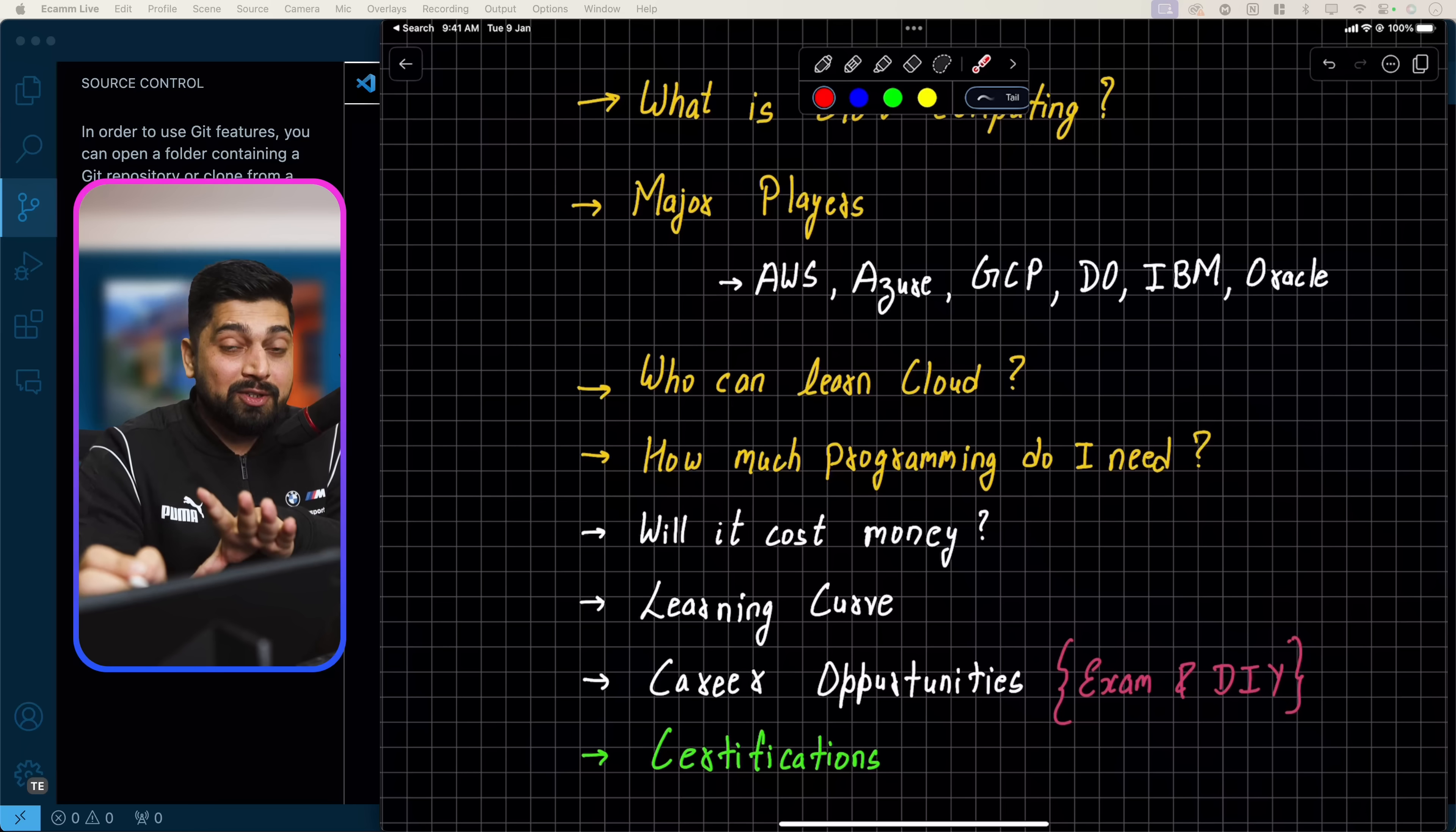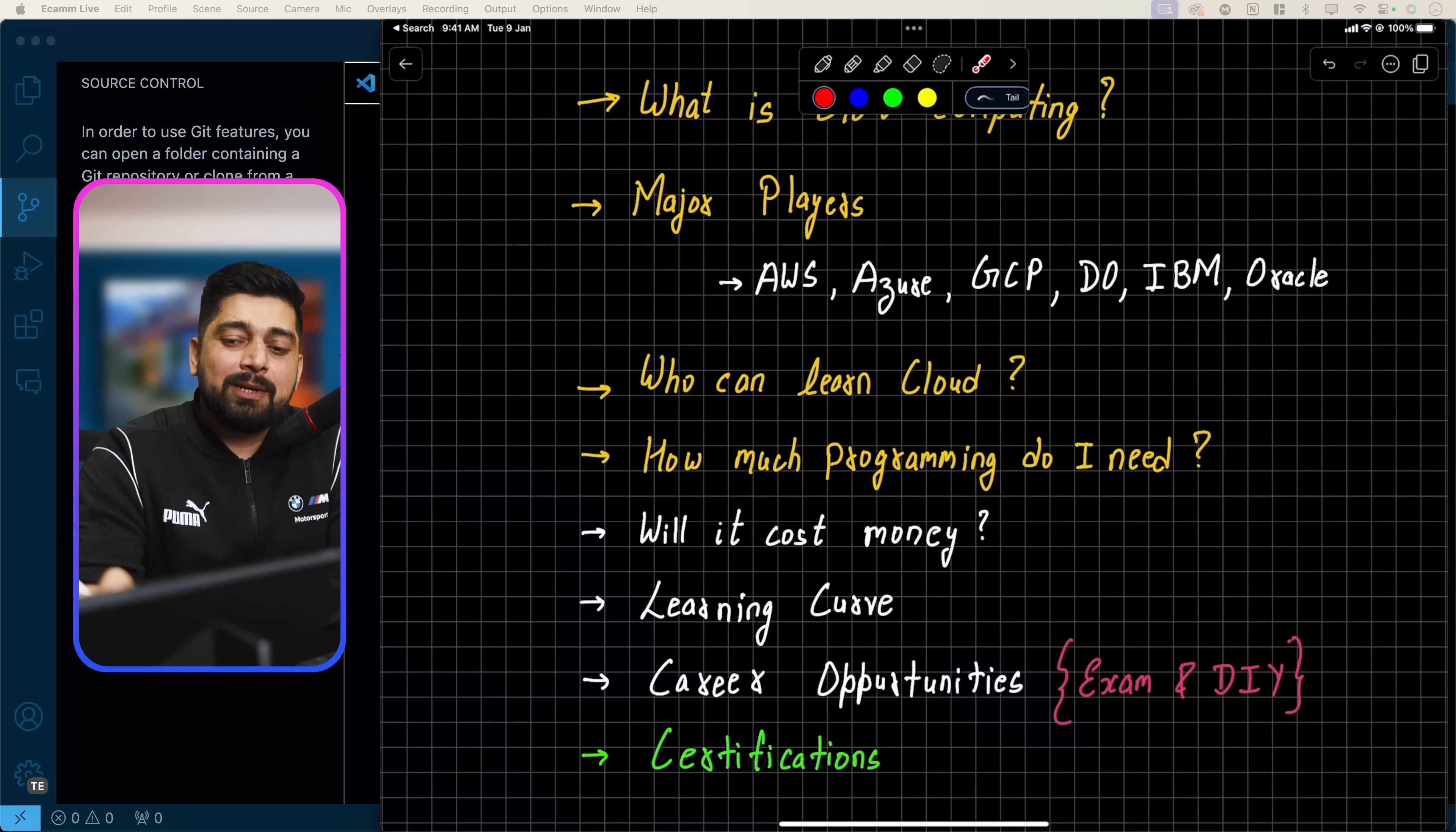Startups are on AWS, big companies have their whole system on AWS. Yes, there is a fight between Azure and GCP, but hands down AWS is the biggest contender. But this is not all—there are many other players which are not being talked about that much because people don't consider them as cloud, but they are 100% cloud.